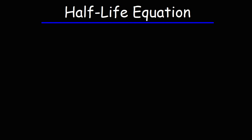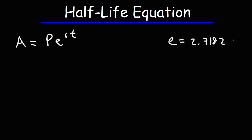In this video, we're going to talk about how we can derive the equation for half-life. We're going to start with this equation: A is equal to P times E raised to the RT. This equation is associated with exponential growth, particularly when that growth is compounded continuously. P is the principal, A is the future value of the account, R is the interest rate or growth rate, and T is the time. E is a number, 2.71828 and so forth — it's the inverse of the natural log function.